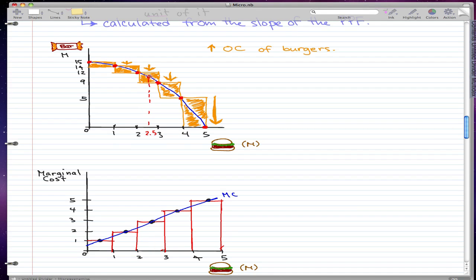That's why at the center of this graph we have 2.5, which indicates that the marginal cost is 3 million.